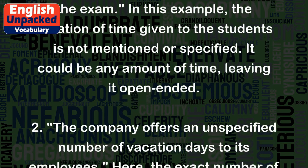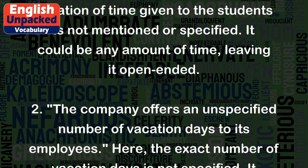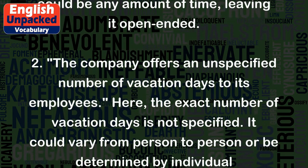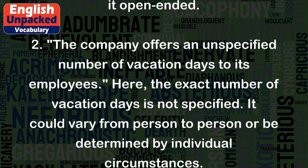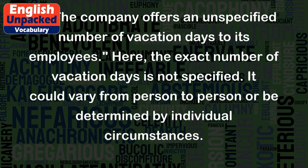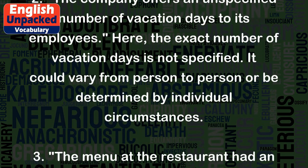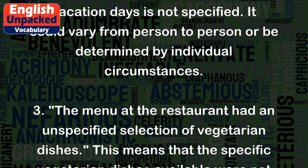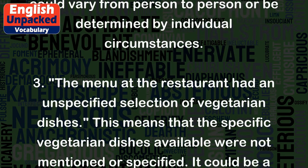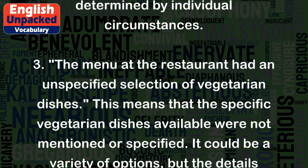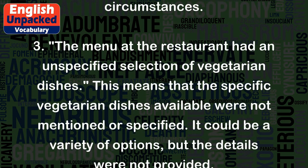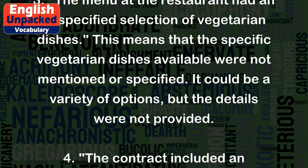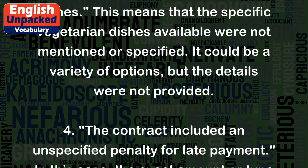Two: The company offers an unspecified number of vacation days to its employees. Here, the exact number of vacation days is not specified. It could vary from person to person or be determined by individual circumstances. Three: The menu at the restaurant had an unspecified selection of vegetarian dishes. This means that the specific vegetarian dishes available were not mentioned or specified. It could be a variety of options, but the details were not provided.